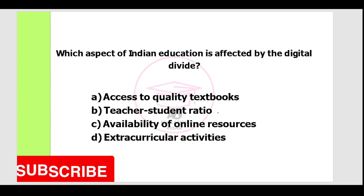Next question. Which aspect of Indian education is affected by the digital divide? Option A: access to quality textbooks. Option B: teacher-student ratio. Option C: availability of online resources. Option D: extracurricular activities. The correct answer is availability of online resources.